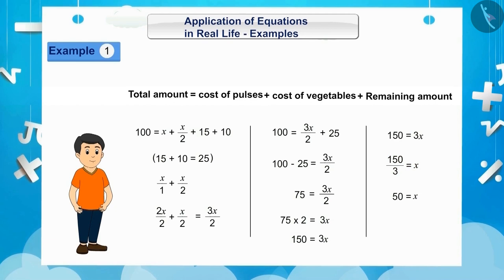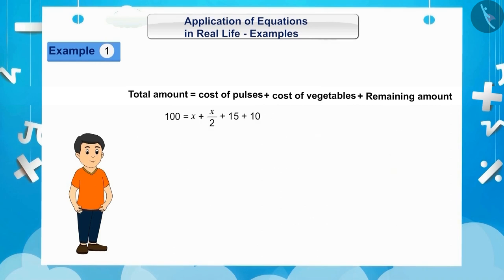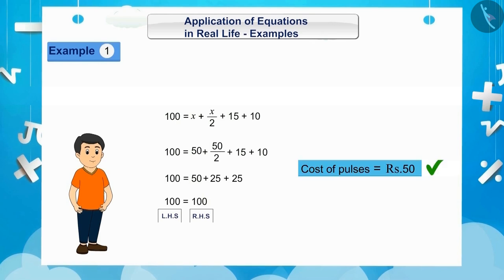Sometimes, there is a misconception that numbers are only in the RHS and variables are only in the LHS. But that is not true. Instead, even after exchanging both sides, they remain equal. Just like, both 50 is equal to X and X is equal to 50 are the same. By placing the value of variable X is equal to 50 in the RHS of the equation, you can verify that this solution is correct. So, the expected answer would be 50, that is, the cost of pulses is 50 rupees.